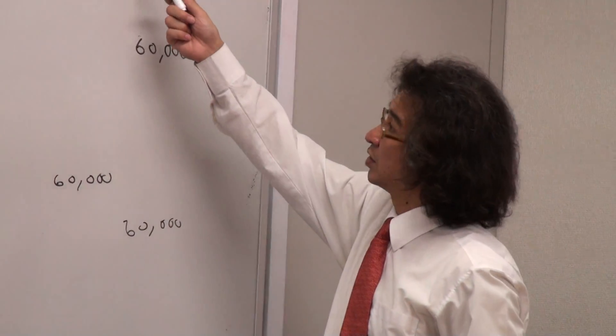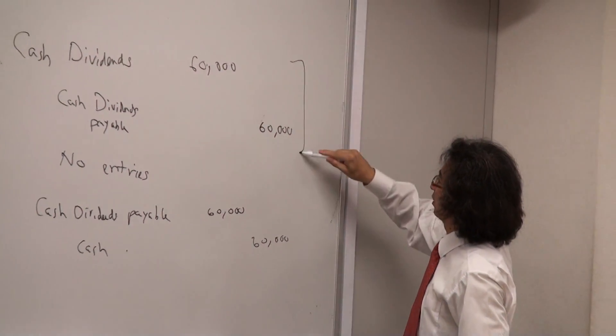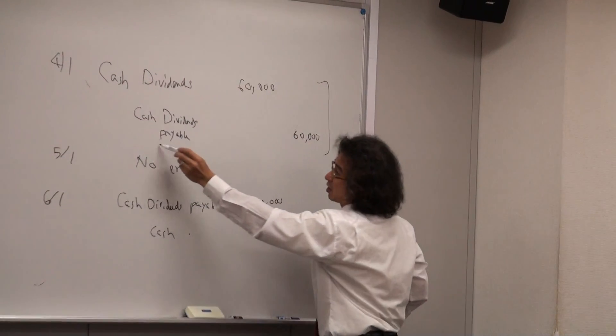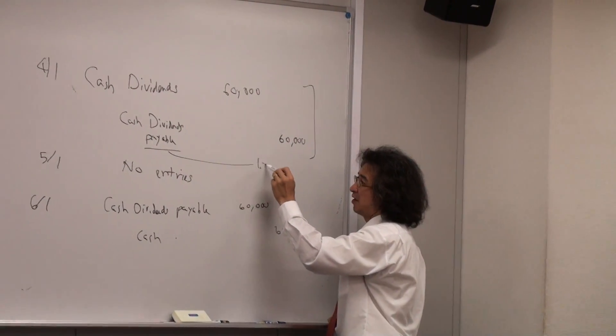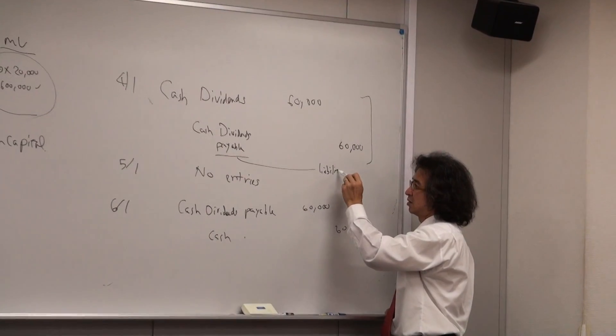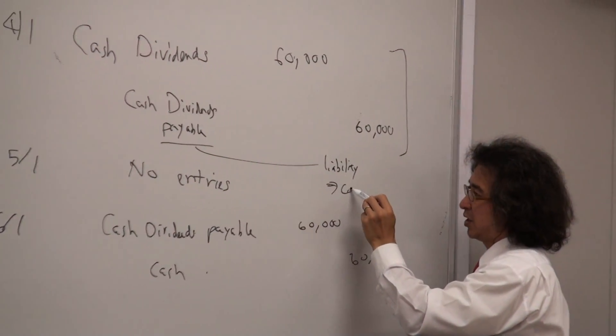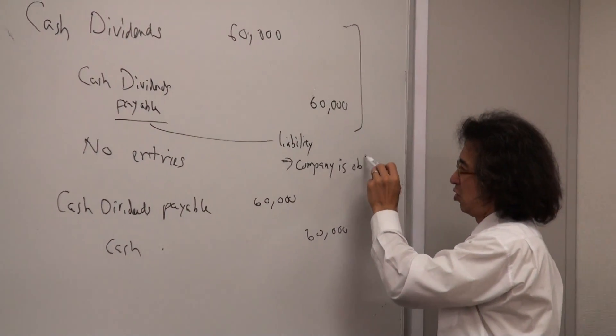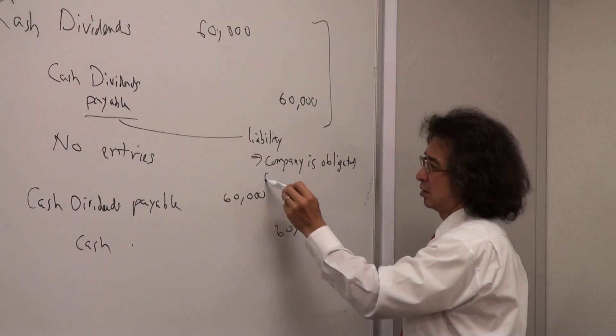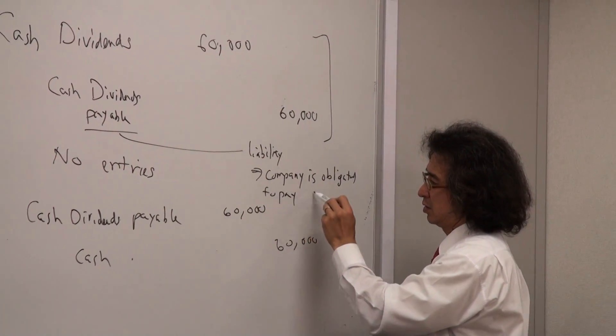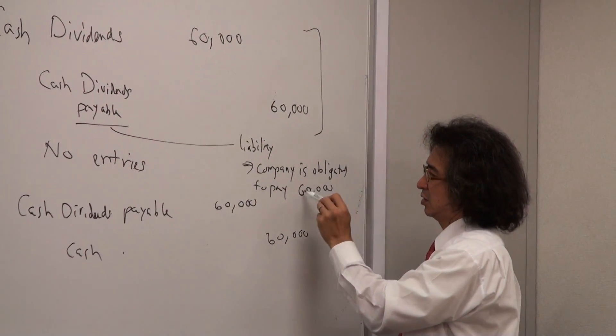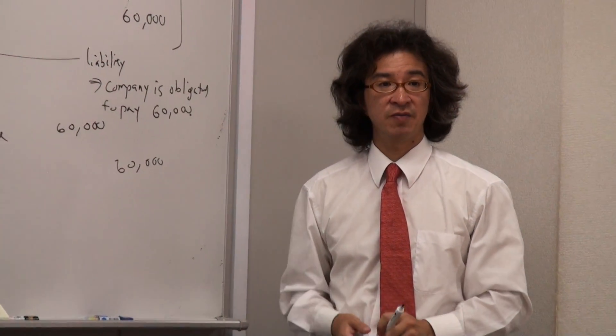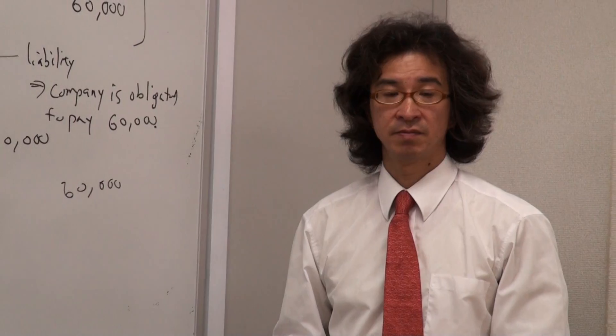So this day, when the company decides to pay, because it's a payable, that means liability. Means that the company is obligated to pay. So June 1st, the company paid the dividend. That's the process.